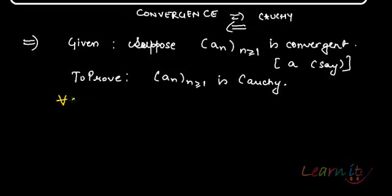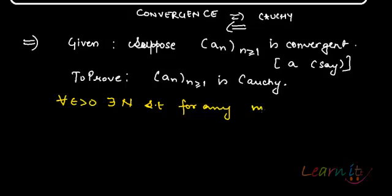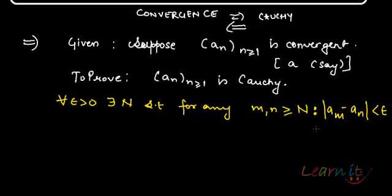What do we need to prove? We need to prove that for all epsilon greater than 0, there exists some capital N, a natural number N, such that for any m and n greater than or equal to N, the distance between the two terms is less than epsilon. Let's start off with an epsilon greater than 0.